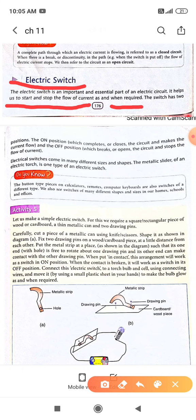The switch has two positions. The on position completes or closes the circuit and makes the current flow. The second position breaks or opens the circuit and stops the flow of current. If the switch is off, it means the electric circuit is open and current does not flow.